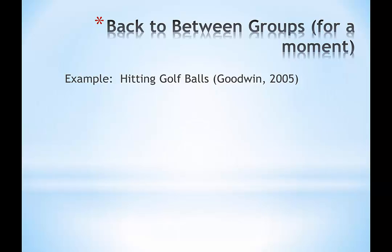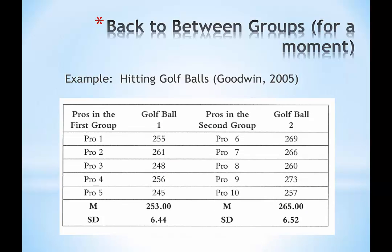To harken back briefly to the between-groups design, this is a hitting golf balls example from Goodwin 2005, which is a really nice example. Think about the graphic on the screen right now. I might have 10 golf pros; I could randomly assign them to two groups. You can see pros in the first group and pros in the second group, each hitting two different golf balls.